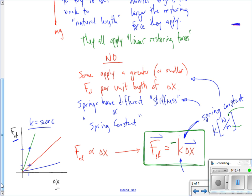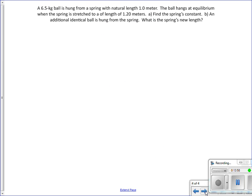When you do mathematical stuff, you won't use the negative. That's all of spring stuff. There's a nice little example here. A 6.5 kilogram ball is hung from a spring with natural length of one meter. The ball hangs at equilibrium when the spring is stretched to a length of 1.2 meters. Find the spring's constant. How do we start this problem? A free body diagram. There is an mg, and there is an f elastic.